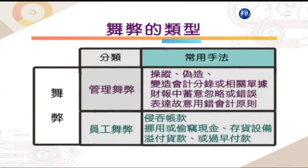以上是舞弊发生的三个成因。舞弊的种类基本上可划分为两大类：一是管理舞弊，一是员工舞弊。管理舞弊是指虚伪不实的财务报导，以故意或不正当方法欺骗财务报导使用者，蓄意删除或揭露某项目金额。管理舞弊又叫做「财务报导不实」，同学不要误以为它是高阶管理阶层的舞弊。